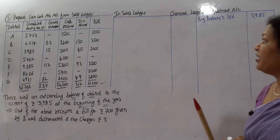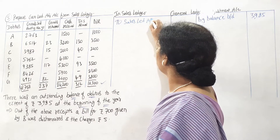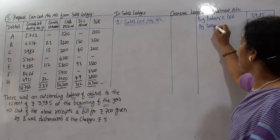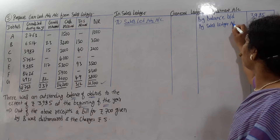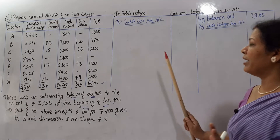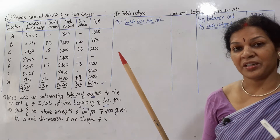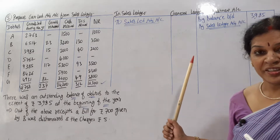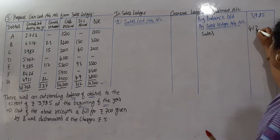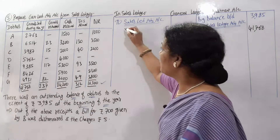We keep the side heading: 'To Sales Ledger Adjustment Account' on the debit side, and 'By Sales Ledger Adjustment Account' on the credit side. Now posting transactions: sales — in the debtors ledger adjustment account, sales was on the debit side; here it comes on the credit side — 41,768. Goods returned, i.e., sales returns — there it was credit side; here it comes on the debit side — 237.